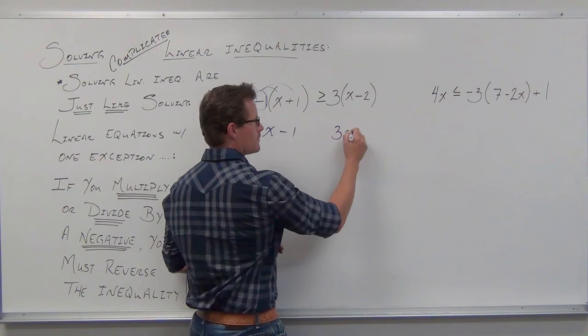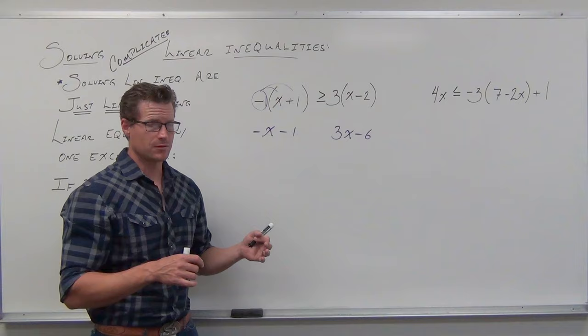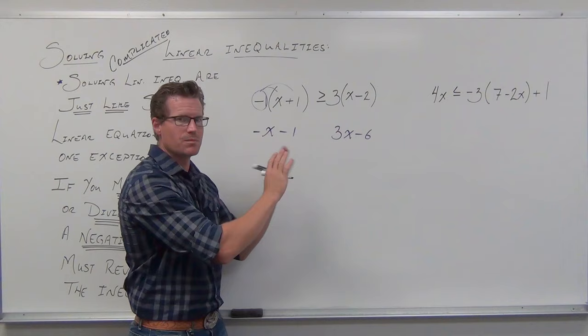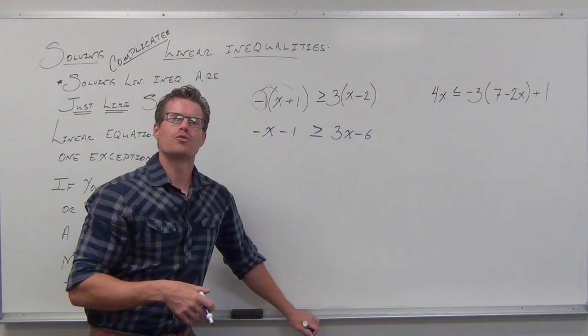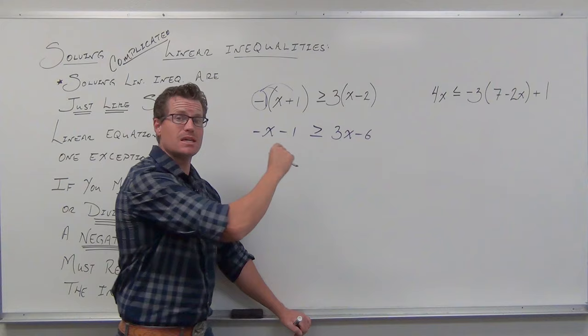So the same rules apply: simplify both sides. We have negative x minus 1, and 3x minus 6. We didn't divide by a negative; we multiplied only one side by distribution, but we're not doing anything to both sides here. Your inequality cannot change yet. After this, we're kind of home free. Get rid of your smaller variable, which would be adding x, or if you choose, subtract 3x to keep your variable on the left-hand side.